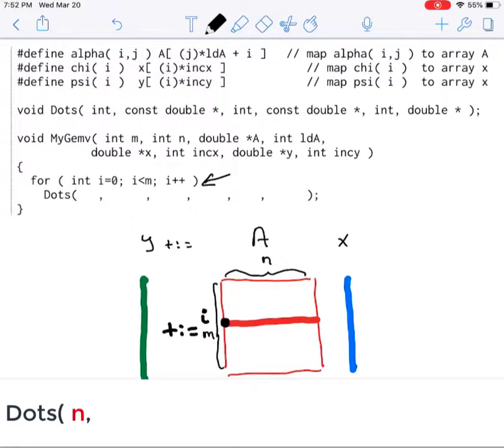And if you think about that, that's the i0 entry in a, and the i0 entry in a is stored at the address &alpha of i comma zero. So you fill that in.